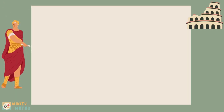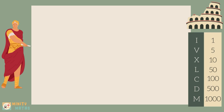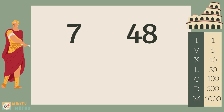You may be wondering about the numbers in between the ones we have covered so far, such as the number 7, or 48 for example. The Roman numerals we have looked at so far can be combined to create the other numbers by adding or subtracting the values of each symbol.